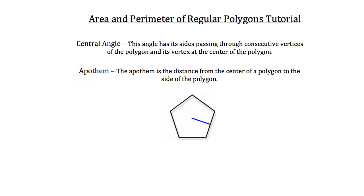The apothem can be used in solving for the area of a polygon. The formula for the area of a polygon is: area equals one half times a, the apothem, times p, the perimeter of the figure. So if this apothem had a length of five centimeters and one side of this regular pentagon had a length of four centimeters, what would the area of this pentagon be?